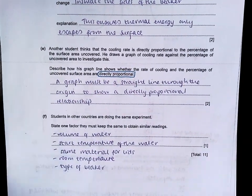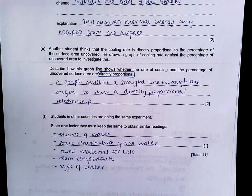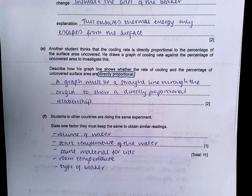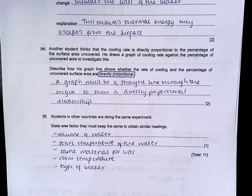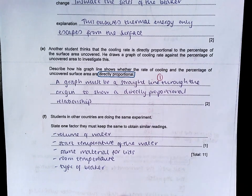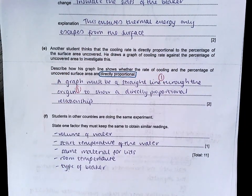In E, another student thinks that the cooling rate is directly proportional to the percentage of the surface area uncovered. Describe how his graph line shows whether these two things are directly proportional. One mark for stating that the graph will be a straight line and one mark saying that it must go through the origin to show a directly proportional relationship.